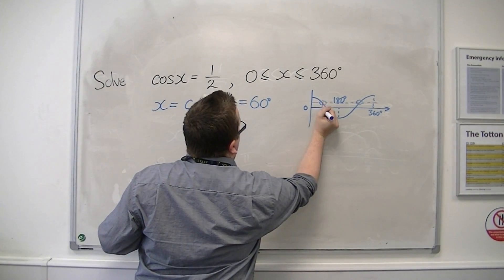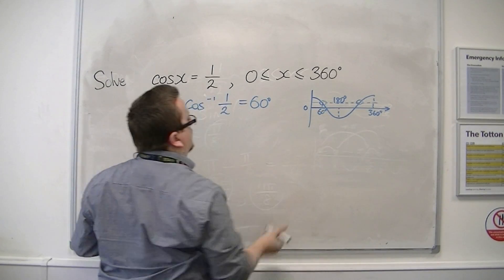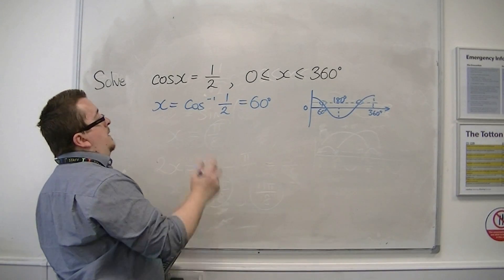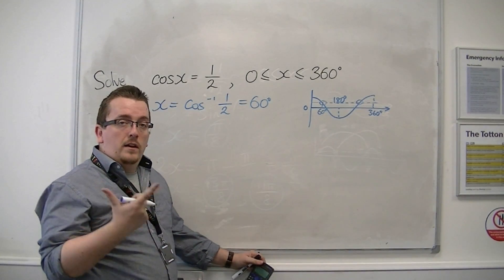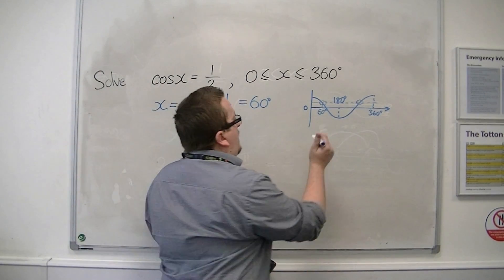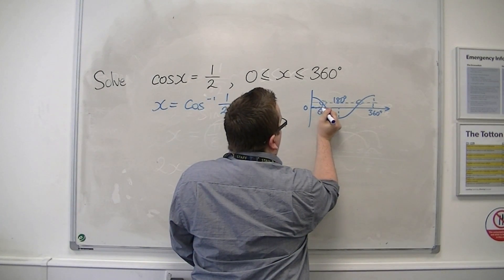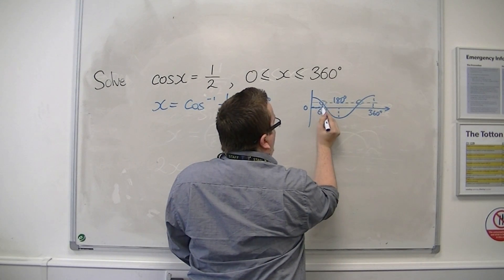That gives you the first solution, 60. Now, like the sine curve, the cosine curve has symmetry to it. If this distance between the top of the curve and that first solution is 60 degrees,